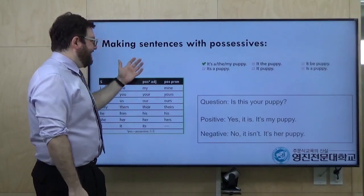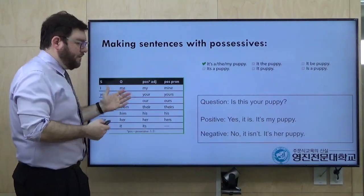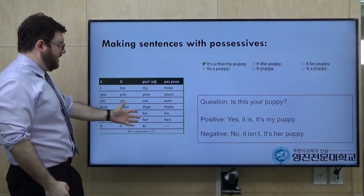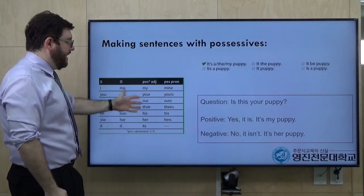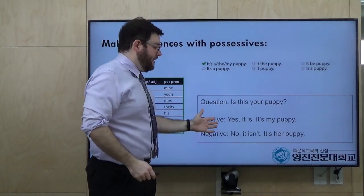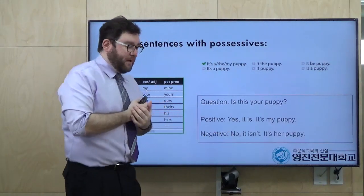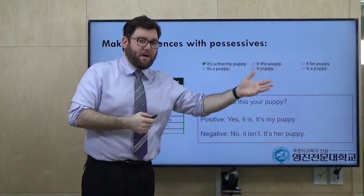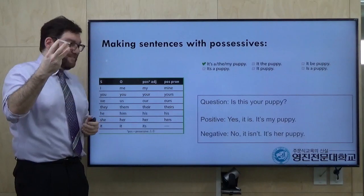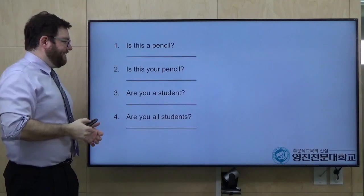Good. And here's something you could pause the video and look at, students — maybe you already know this from high school. We will also be using possessive pronouns. For example: is this your puppy? Yes, it is. It's my puppy. Or a negative response: no, it isn't. It's her puppy. So students, you should study the possessive pronouns — pause the video if you need to.